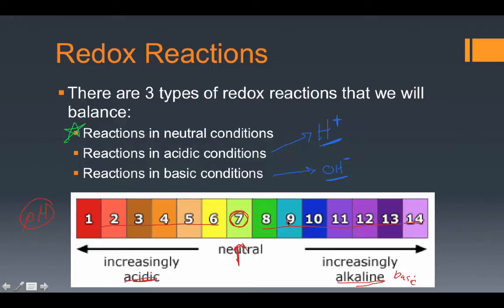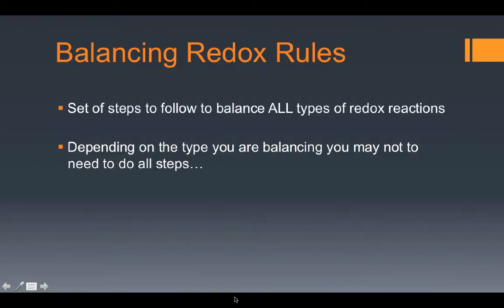The actual pH doesn't matter right now; we just need to keep track of acidic versus basic. This brings us to the rules for balancing a redox reaction. All the steps we're going to write down will balance all types of redox reactions — neutral, acidic, and basic. Depending on what type you're actually balancing, you may not need to do all the individual steps. Some steps are specific to acidic, some to basic, and some apply in all three cases.